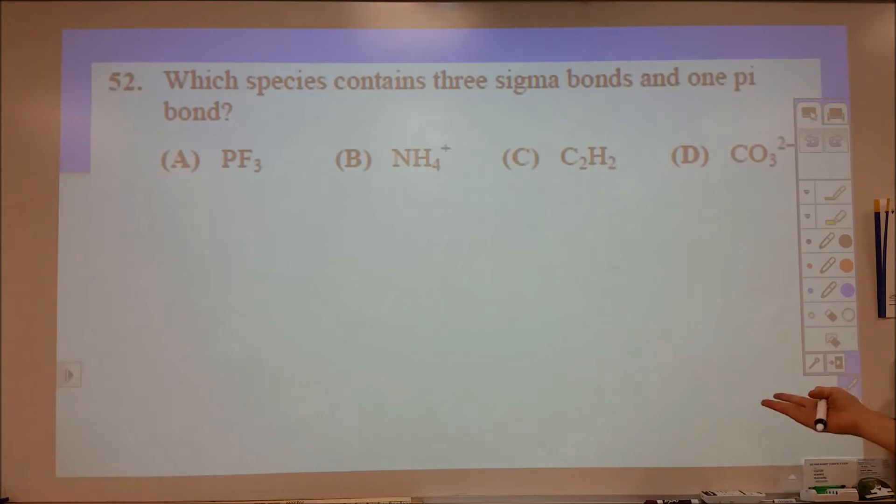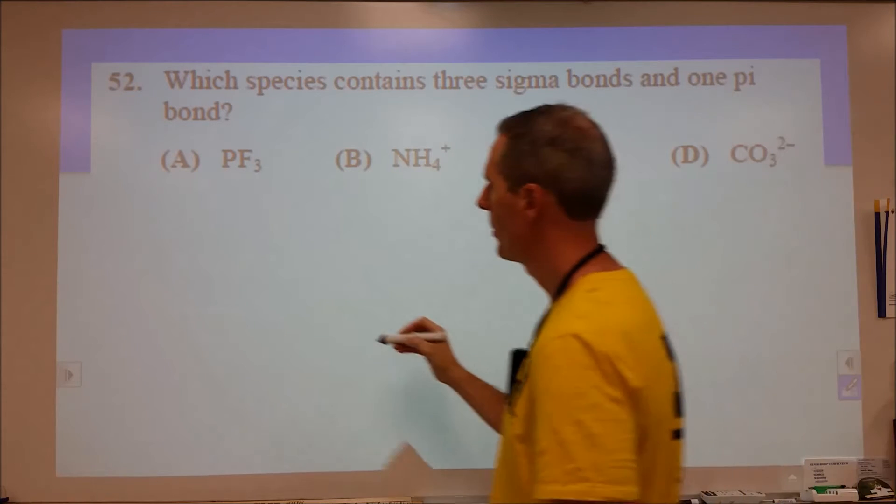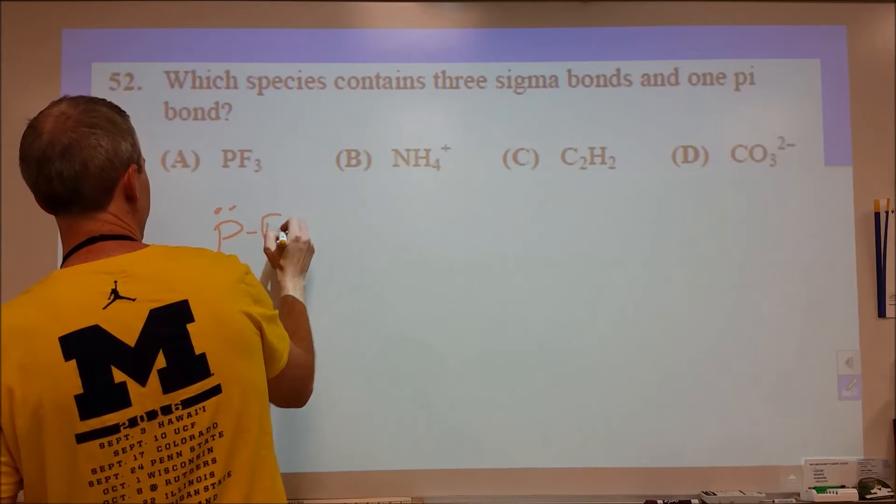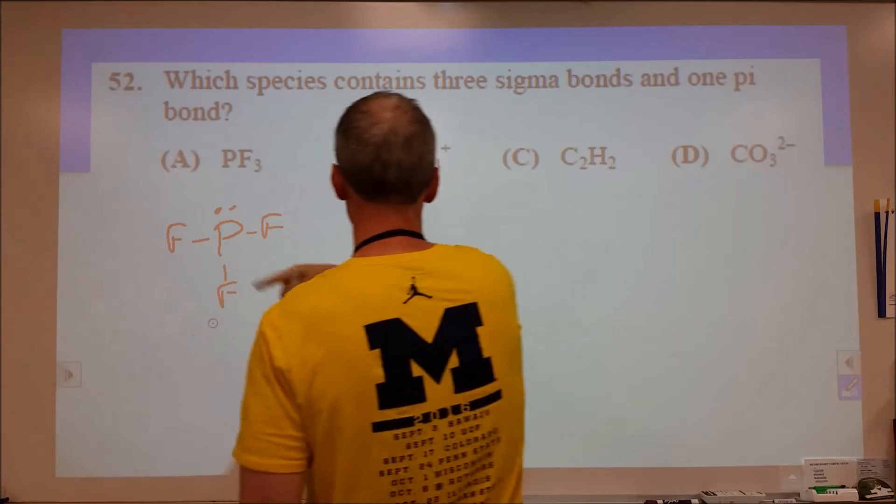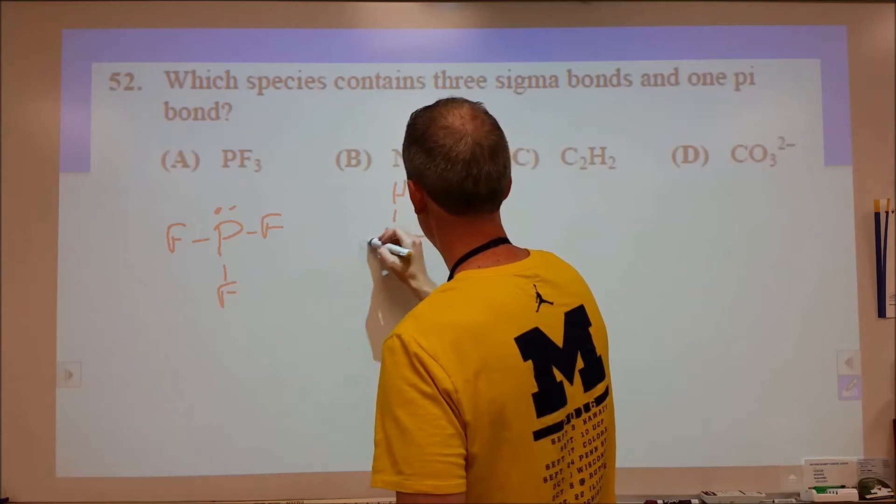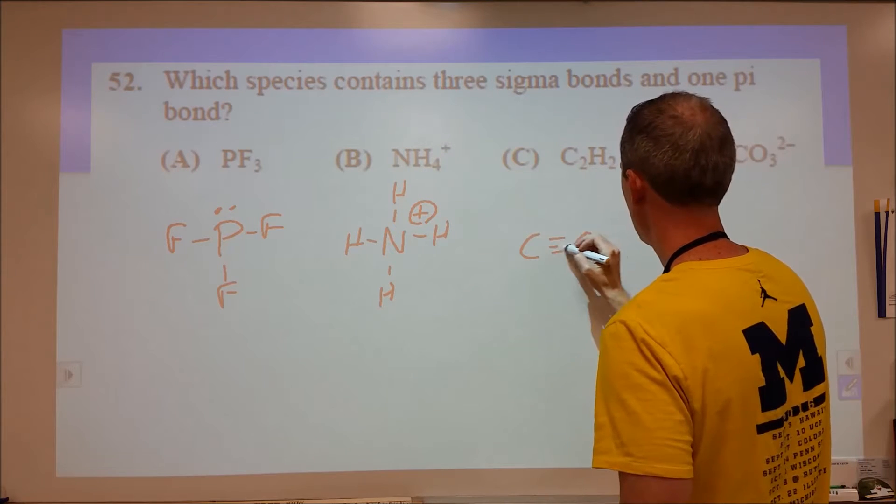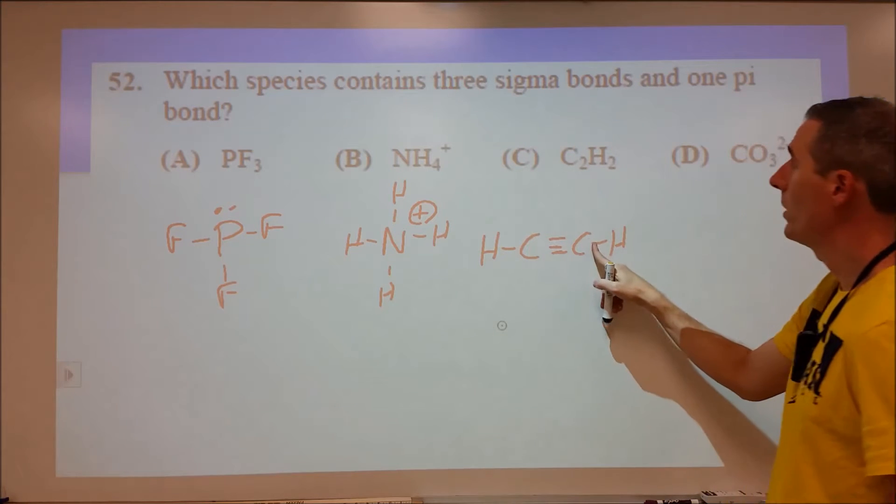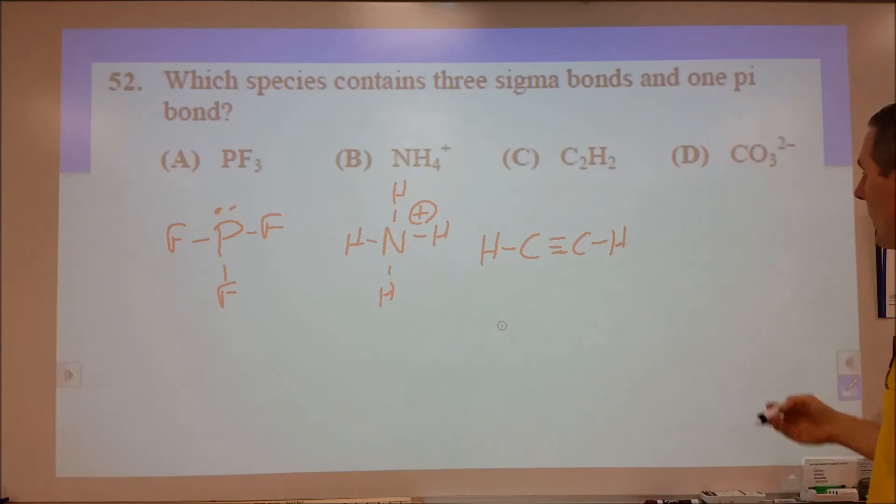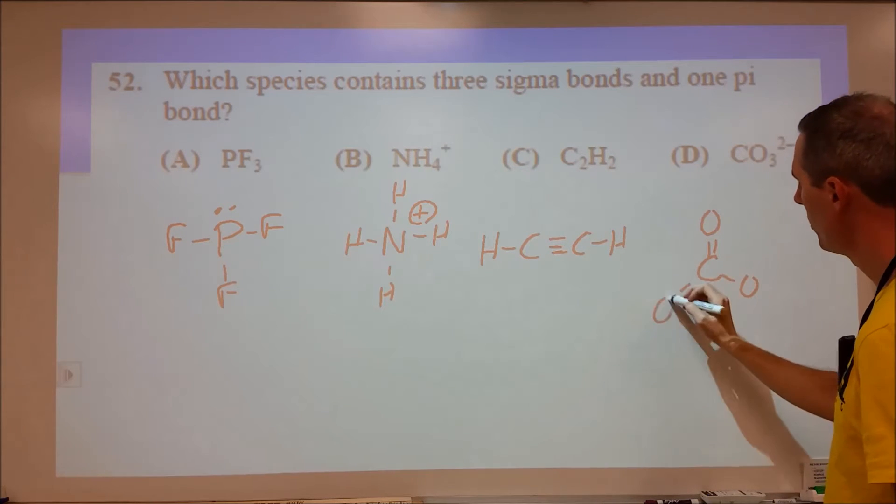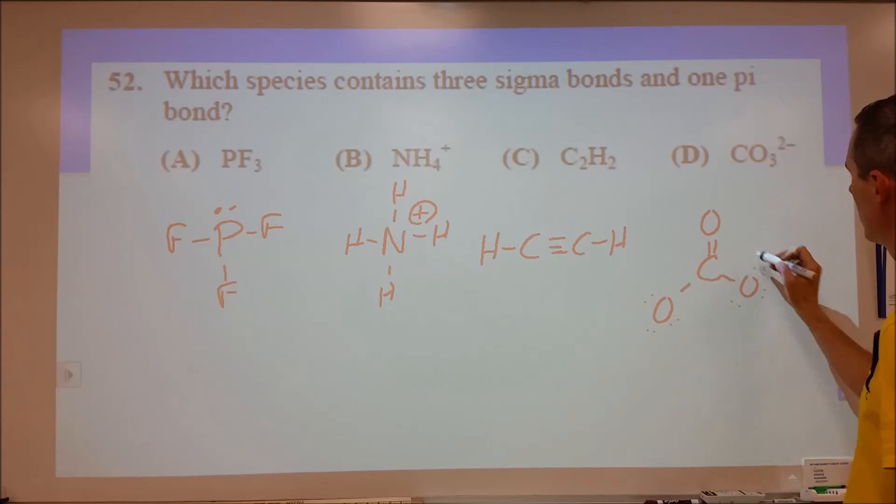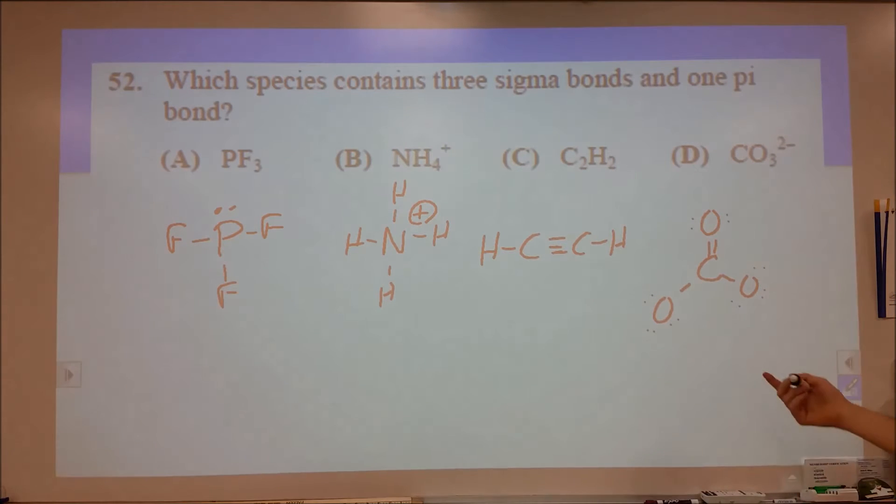Three sigma bonds and one pi bond. So we're looking probably at a double bond and then two other single bonds. So again, we draw our Lewis structures real quick. I'm going to leave the lone pairs off on the external parts. C2H2, acetylene or ethyne is going to have three sigma, but it's going to have two pi bonding interactions. And carbonate is the last one. And this is of course going to resonate. But within its resonance, we're going to have three sigma interactions and then pi delocalization over the whole thing. So D was the answer.